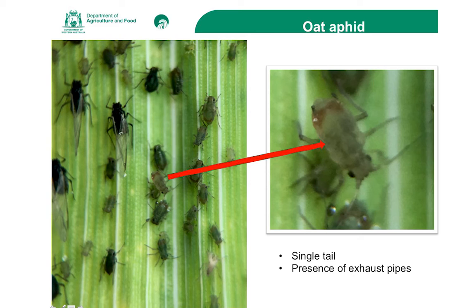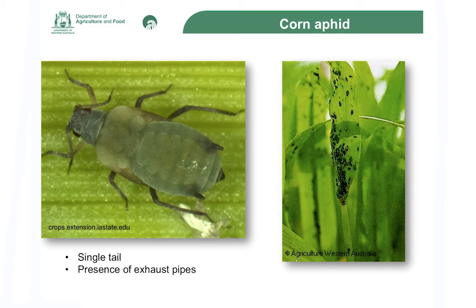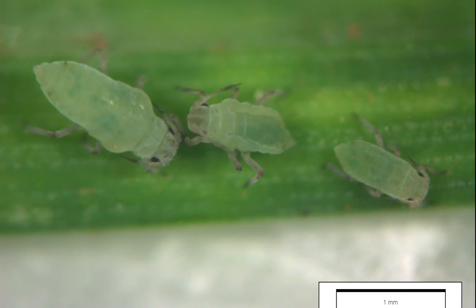In terms of the other common cereal aphid, the corn aphid, you can see it's quite different, but you can also see those exhaust pipes on the top of the backside. In that picture on the right, there are a lot of aphids, but really without a hand lens you're not going to be able to see those features. So it's really important to get in with a hand lens. A lot of smartphone cameras are really good these days, and often you can zoom in, or if you have a macro lens attachment to your smartphone, those are really good. The most distinctive features of the Russian wheat aphid are really the lack of those cornicles and the shape.